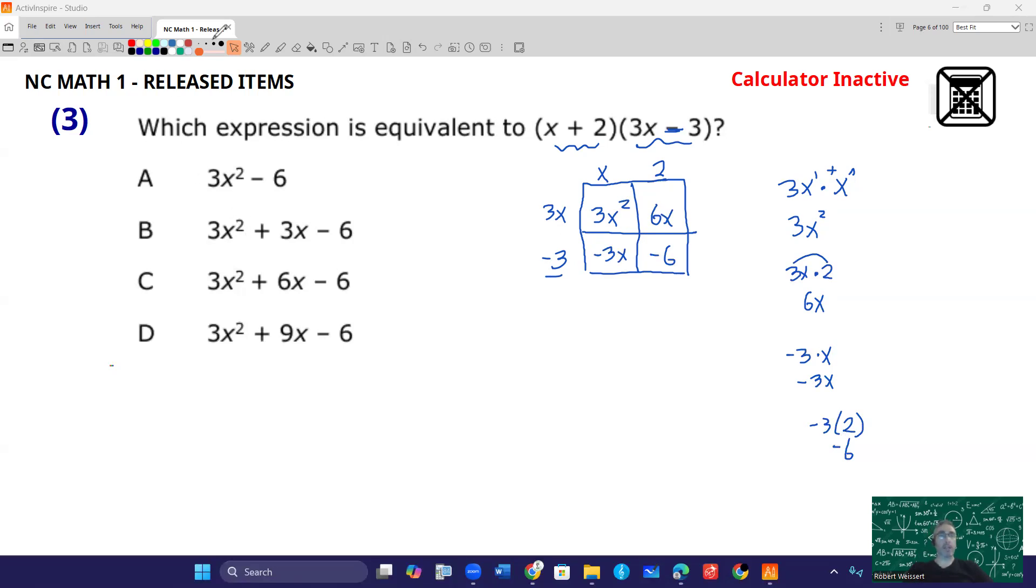And then you can combine anything that you have as like terms. Like terms, of course, are going to be terms that have the same variable with the same exponent. In this case, the x's have an exponent of 1. So this is negative 3x and positive 6x. That's like saying 6x minus 3x, if you want to think of it as a subtraction. And that's going to give you 3x. So 6x minus 3x is 3x.